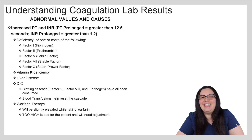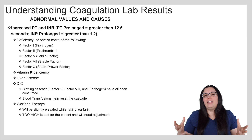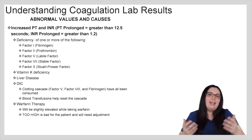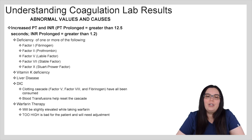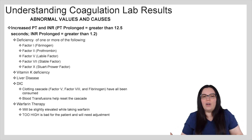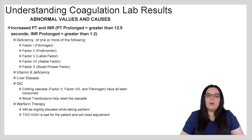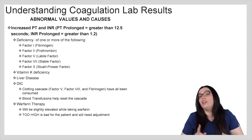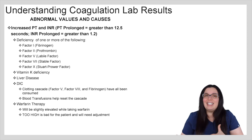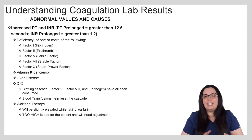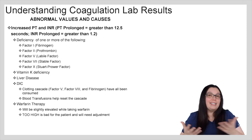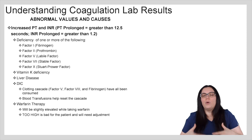Let's talk about increased PT and INR — that prolongation in coagulation studies. PT will be greater than 12.5 seconds and INR greater than 1.2. Causes include deficiencies of one or more of the following factors: factor 1 (fibrinogen), factor 2 (prothrombin), factor 5 (labile factor), factor 7 (stable factor), or factor 10 (Stuart-Prower factor). Other causes include vitamin K deficiency, liver disease, and DIC — where factors 5, 8, and fibrinogen have all been consumed. Blood transfusions can help reset that cascade and serve as a treatment in those cases.